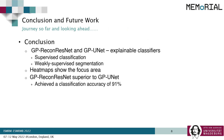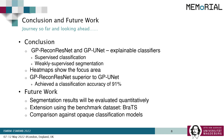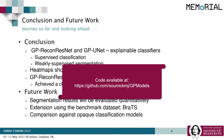To conclude, we introduced the GP workflow for supervised classification and weakly supervised segmentation. The heatmaps show the focus area of the models, making them explainable. GP ReconResNet outperformed the GP unit model, achieving 91% accuracy. In the near future, the segmentation results will be evaluated quantitatively. This work will also be extended using the BRATS brain tumor benchmark dataset, and comparisons against state-of-the-art opaque classification models will also be performed. The code of this research is available on GitHub.